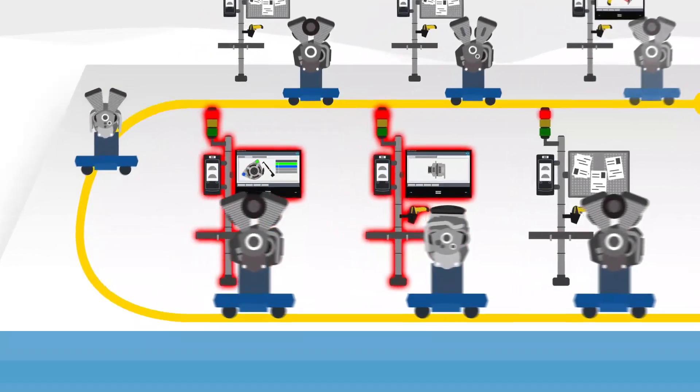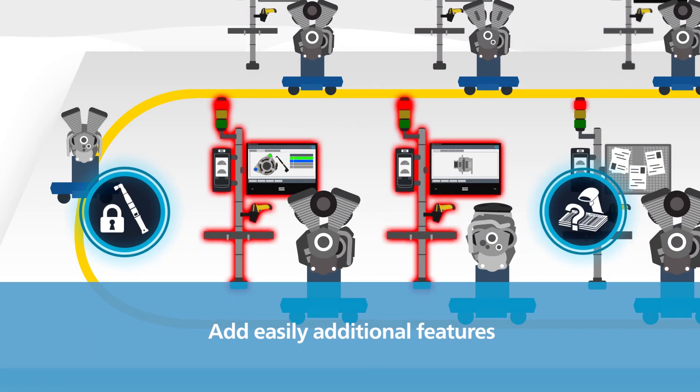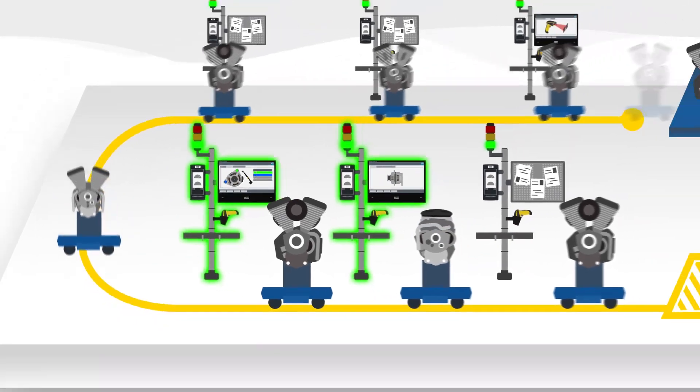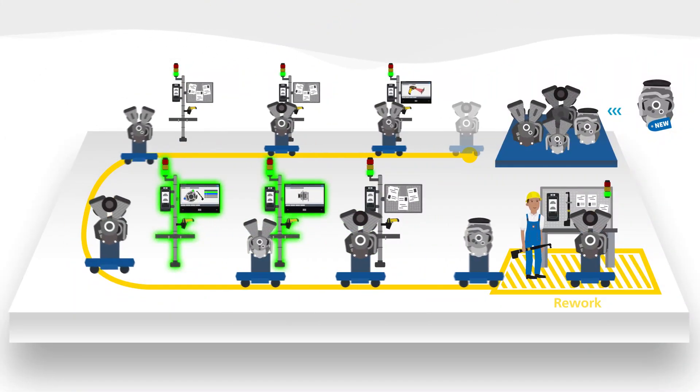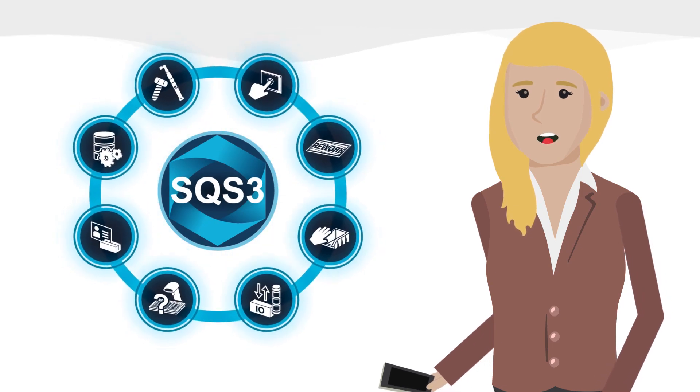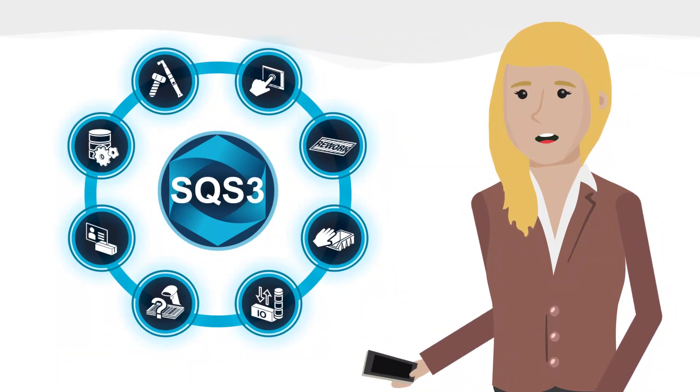Additional features of error-proofing were needed in the same critical stations. We interlocked new tools and added mandatory part verification, ensuring the right parts are installed. Two of the options offered by SQS3, which can be easily added and we only pay for what we need.